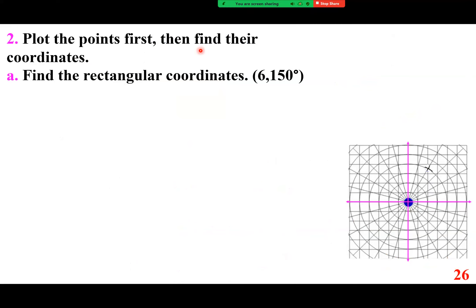Plot the point 6 comma 150 degrees, then find its rectangular coordinates. That means you go 150 degrees and count 6 units out on the polar grid.